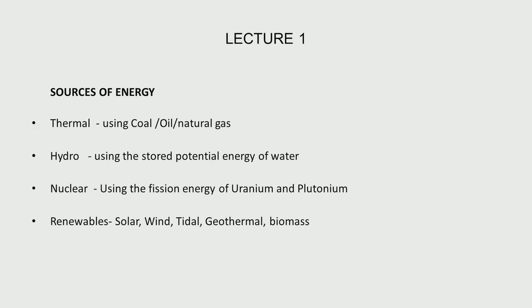The first source is thermal energy, wherein we burn coal, oil, or natural gas. The heat that is produced is used to convert water into steam, and that steam rolls a turbine. The turbine runs a generator, and that is how you get electricity.